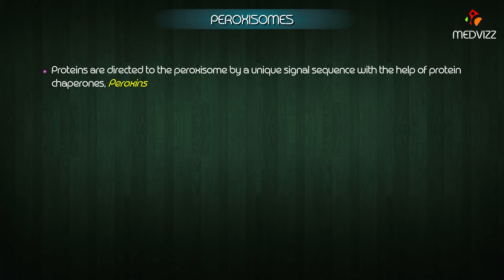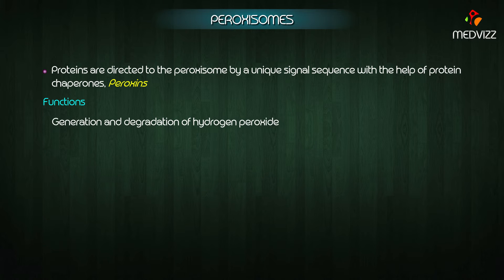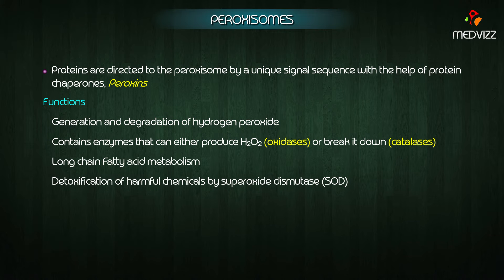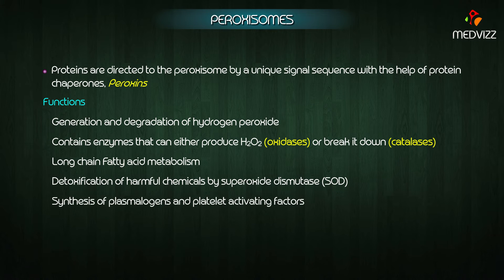Peroxins functions include generation and degradation of hydrogen peroxide — they contain enzymes that can either produce H2O2 or break it down. Other functions include long-chain fatty acid metabolism, detoxification of harmful chemicals by superoxide dismutase, and synthesis of plasmalogens and platelet activating factors.